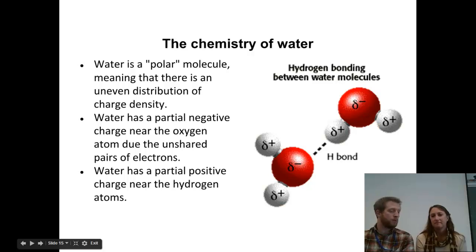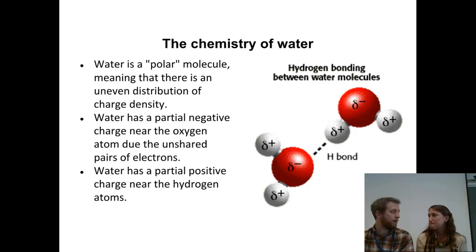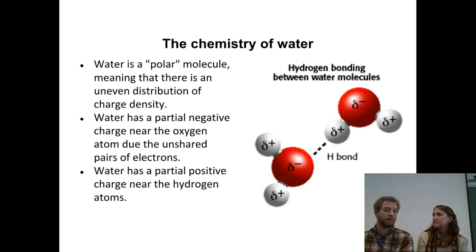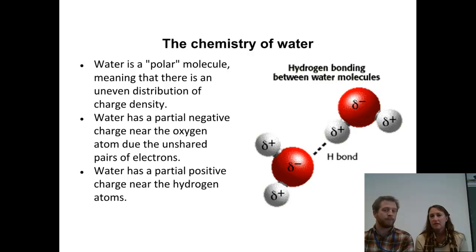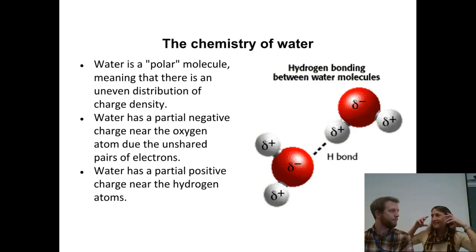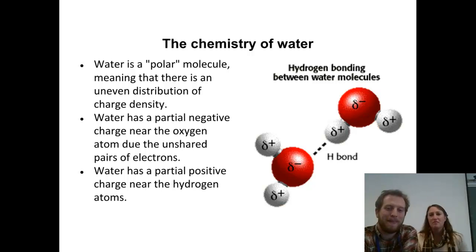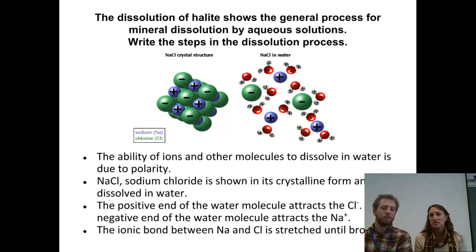First we've got to talk about water. Basically a lot of these weathering agents all have to do with water. Without water, we wouldn't really have any of this weathering take place. Water is a really cool molecule — it's polar, meaning it's got a positive and a negative side. The positive side is on the side with those hydrogen atoms, and the negative side is on the side with that oxygen atom. So it kind of looks like Mickey Mouse, with the two hydrogens being the ears and the oxygen being Mickey Mouse's face. That polar nature makes water the universal solvent because it dissolves a lot of things.